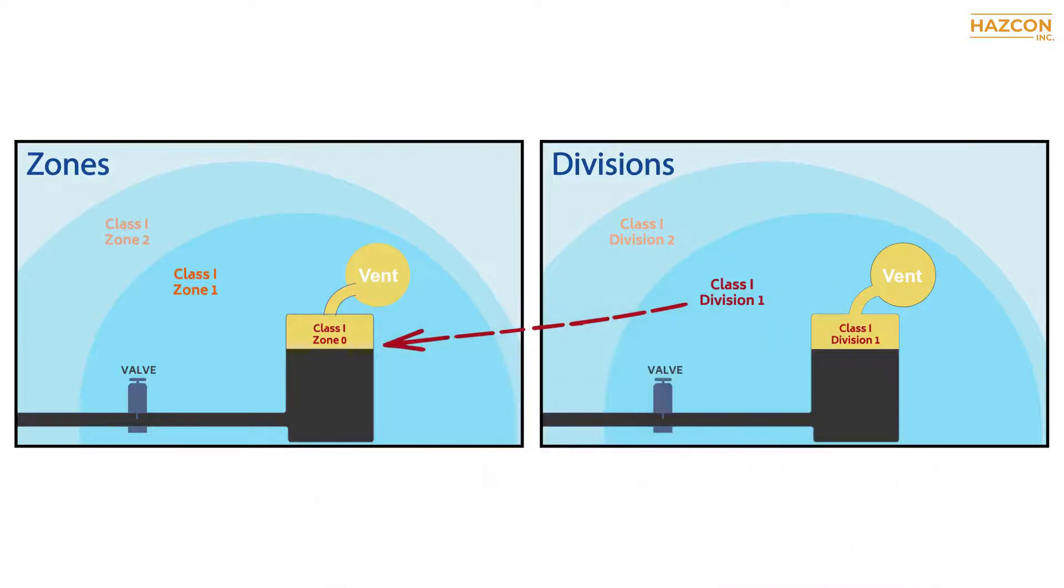Class 1 Division 1 products are permitted to be installed in zone 0. Please note that only intrinsically safe products, EX IA may be installed in zone 0. Class 1 Division 1 products may be installed in zone 1 and in zone 2 and may also be installed in class 1 Division 2.